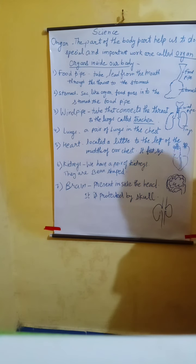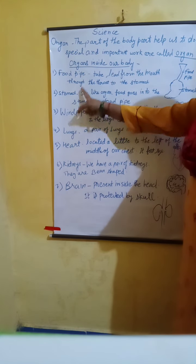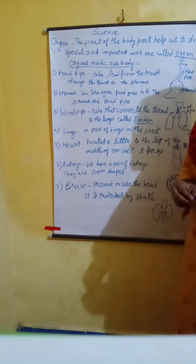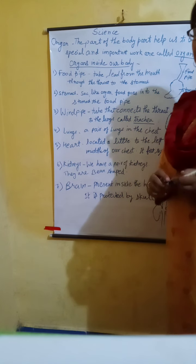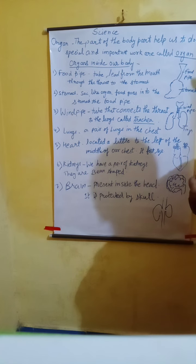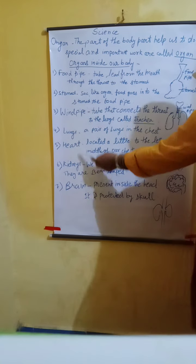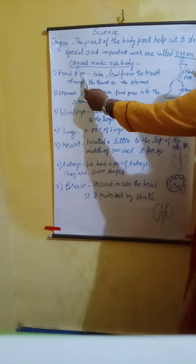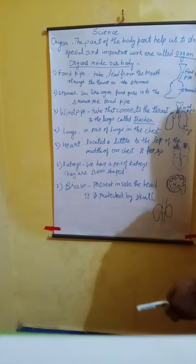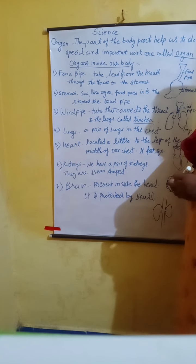All these are the organs present inside our body. Many other organs are also found in our body, such as the small intestine and others. But all these organs play a very important role: food pipe, stomach, wind pipe, lungs, heart, kidneys, and brain. So students, these are the organs found in our body.